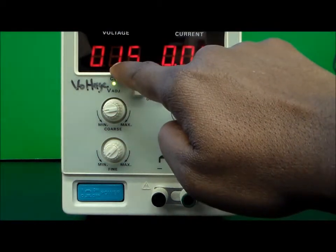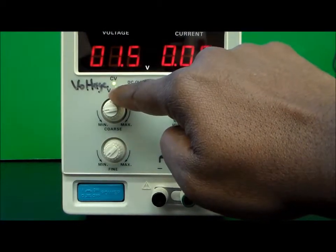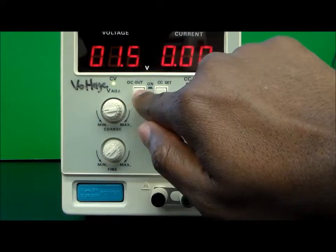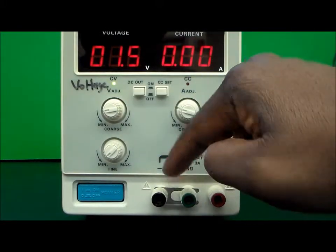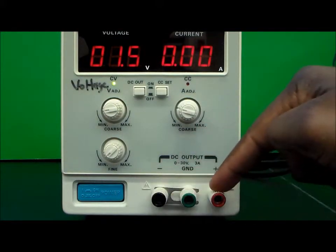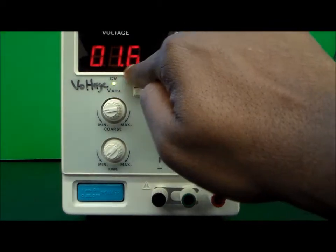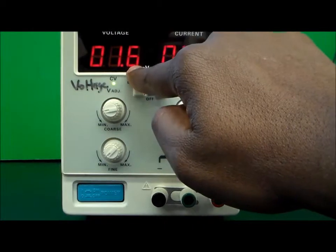Currently right now, we're getting 1.5 volts coming out of the power supply. This button over here controls whether or not we're getting a voltage output out of the terminal. If I push the button in, which means that it's on, then I'm going to get 1.6 volts coming out of the terminal.